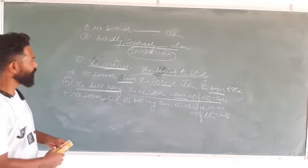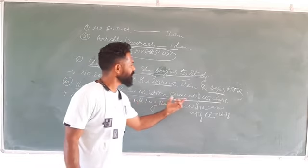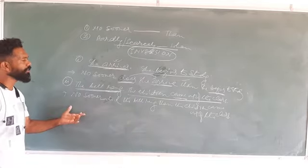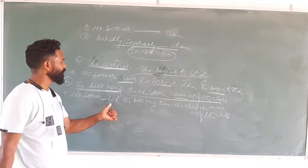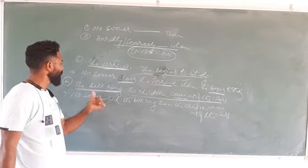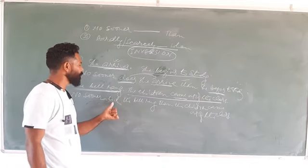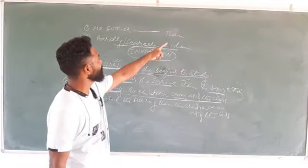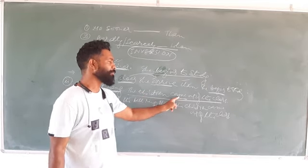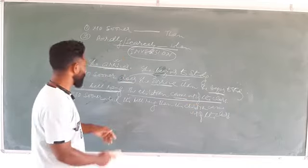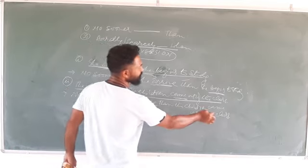Notice that 'did' has influence only over 'ring' — so 'ring' goes to its first form. But 'did' has no influence over the verb 'came' in the second part of the sentence. So the second clause remains: 'the children came out of the class.' The pattern is: No sooner did the bell ring than the children came out of the class.